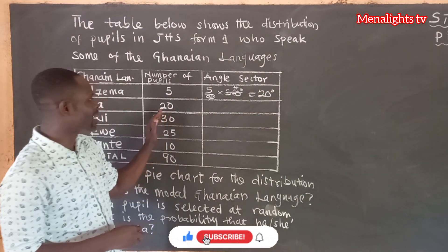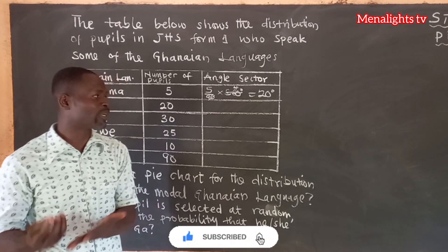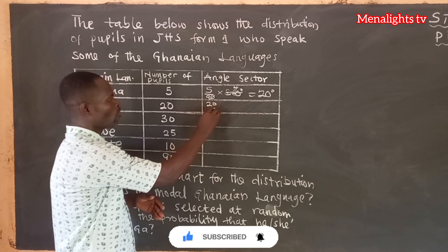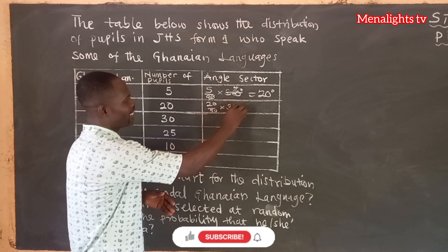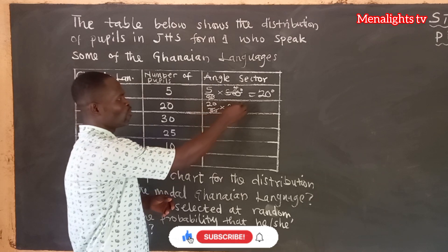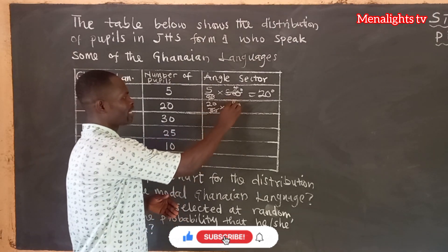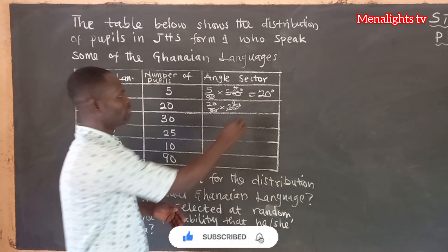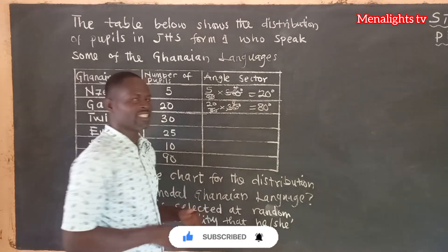We come to Ga, which has 20 students. So 20 over 90 times 360 degrees. 90 goes into 360 four times, so 4 times 20 gives us 80 degrees.